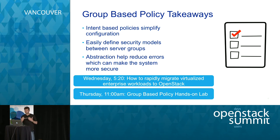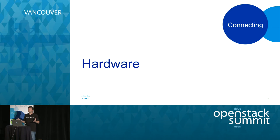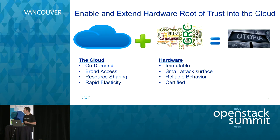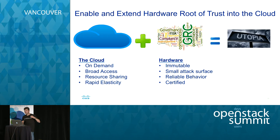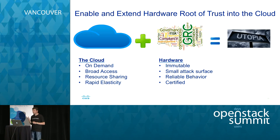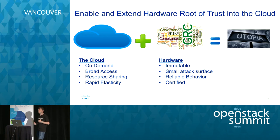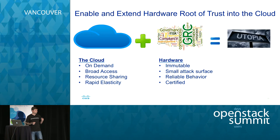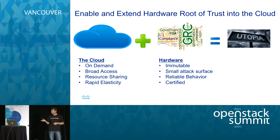Up until now I've talked about just software, but the cloud has to run on something — there's hardware too. If we're talking about defense in depth at every part, we need to talk about the hardware. With the cloud you've got great things: flexibility, things available on demand, broad access, resource pooling, rapid elasticity. But hardware from a security point of view is really interesting — it's relatively immutable, has a very small attack surface, very reliable behavior, and often is certified with FIPS or other government certifications. It's really cool to take the properties of both and marry them together. I'll now introduce Raghu Yuluri from Intel to talk about what Cisco and Intel have done to make the cloud more secure.